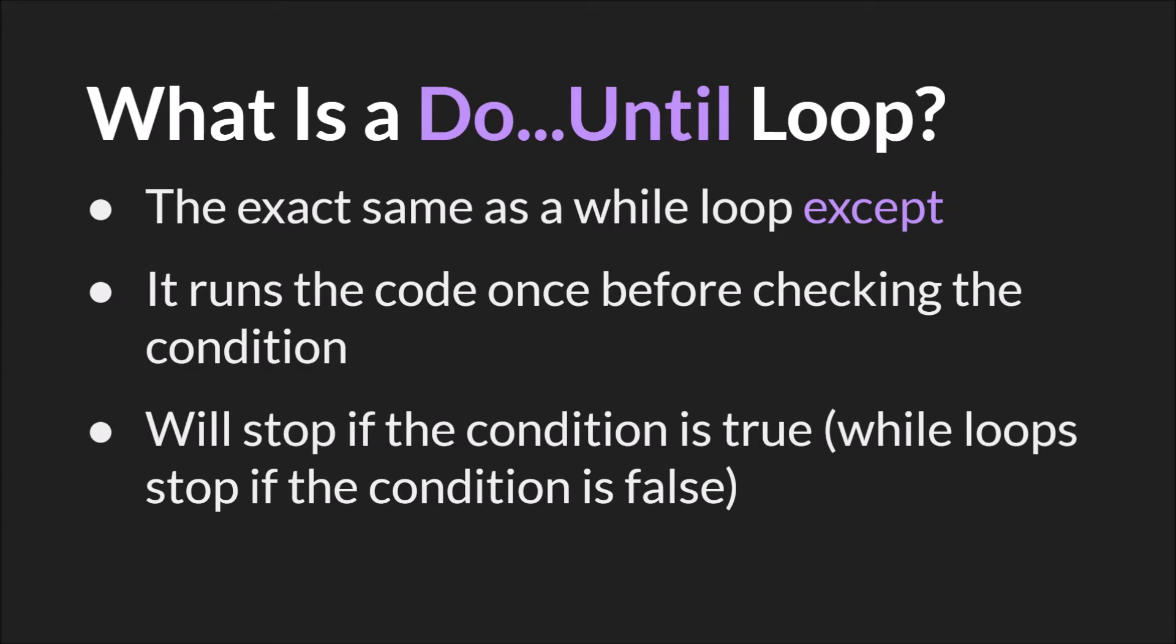A do until loop is exactly the same as a while loop, except that it will run the code once before checking the condition, and it stops if the condition is true, whereas the while loop will stop if the condition is false.